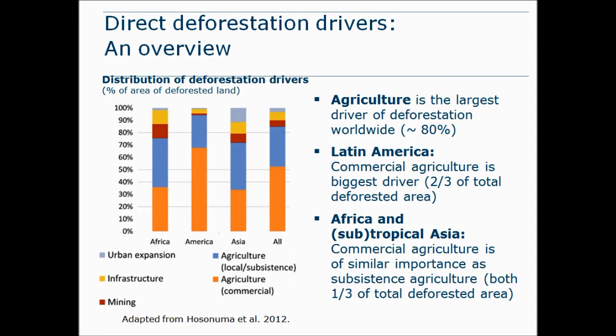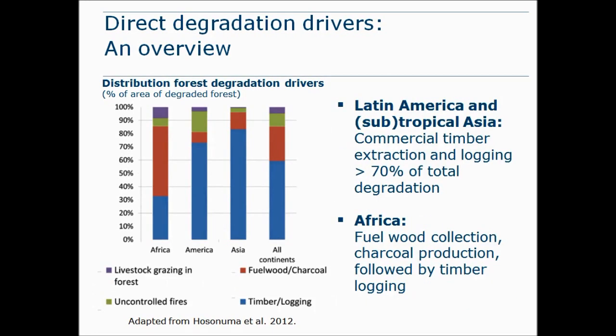Let's take a quick look at the Hosunuma study to see what are the main drivers of deforestation and degradation. These results are based on an analysis of REDD+ readiness reports and other literature. The bar chart shows that the largest driver of deforestation worldwide is agriculture in terms of area of forest loss. In Latin America it concerns mostly commercial agriculture, while in Africa and subtropical Asia there is an equal distribution of commercial and subsistence agriculture. The largest driver of degradation in Latin America and subtropical Asia is timber and logging, while in Africa it is fuel wood collection and charcoal production.